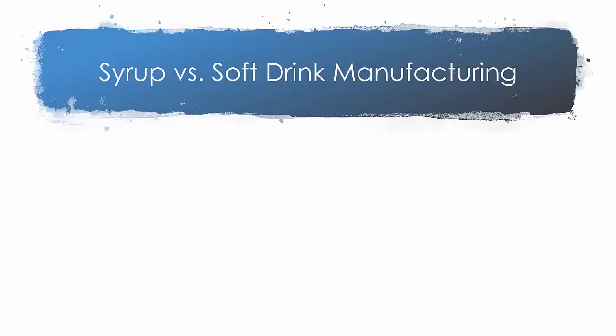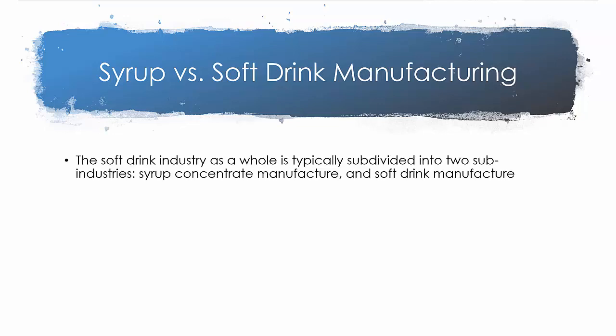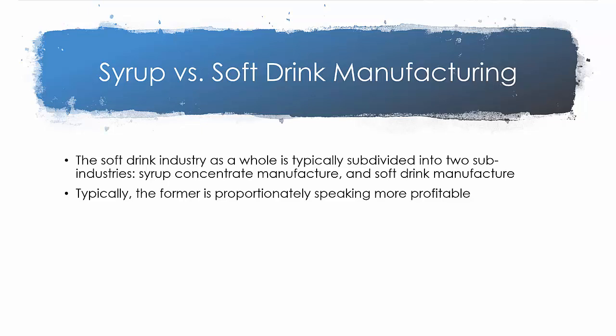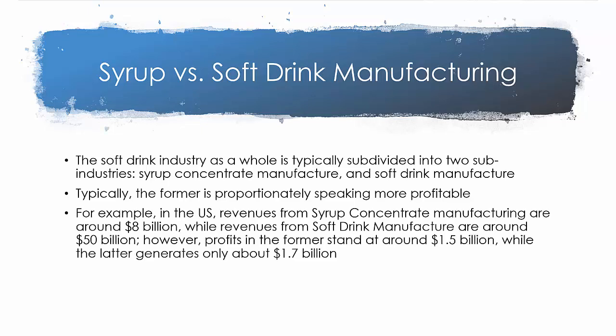The soft drink industry is typically subdivided into two sub-industries: the syrup concentrate manufacturer and the soft drink manufacturer. The former is proportionately speaking much more profitable. In the United States, revenues from syrup concentrate manufacturing are around $8 billion while revenues from soft drink manufacturing are around $50 billion. But when you look at actual profit margins — syrup concentrate manufacturing generates around $1.5 billion profit, while soft drink manufacturing only generates about $1.7 billion in total profits — the percentage margins are much, much healthier in syrup concentrate manufacturing.